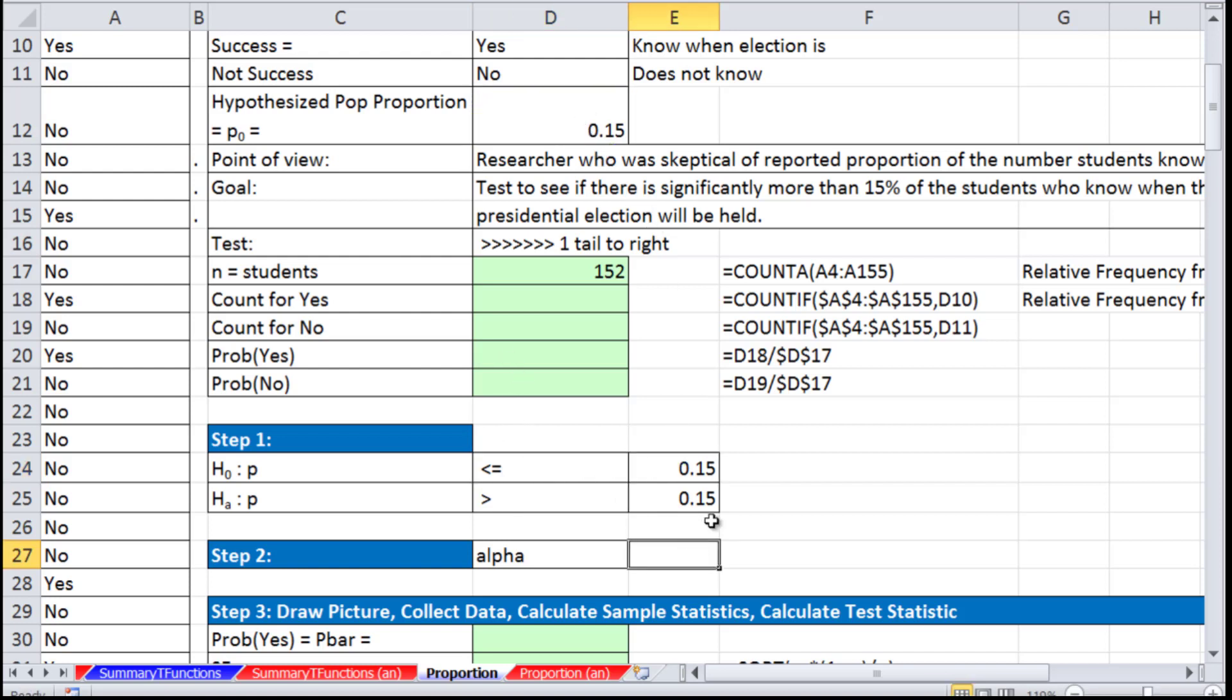Our alpha is 0.01. We want to be super sure here. We're going to set the hurdle high. If alpha is low, the hurdle is high. Type 1 error is reduced when we decrease alpha, which means we have less of a chance of rejecting the null hypothesis even though it was true.